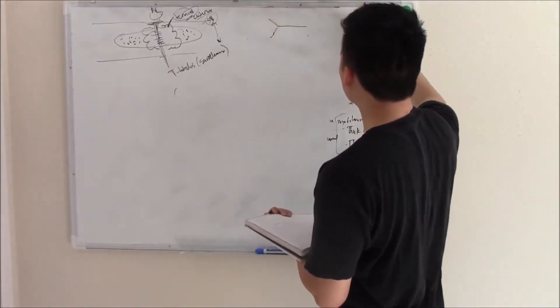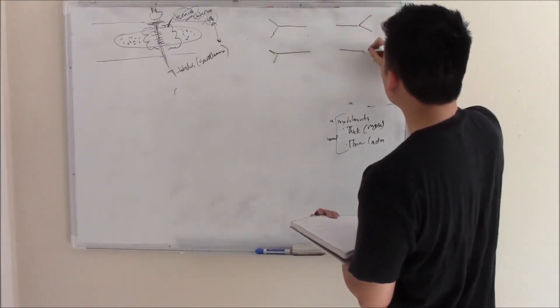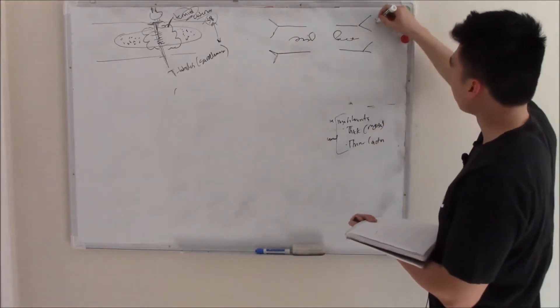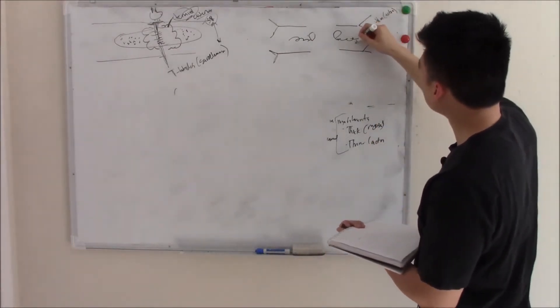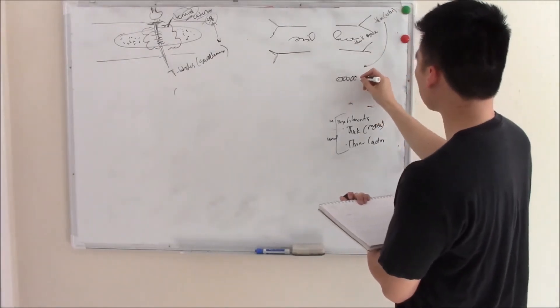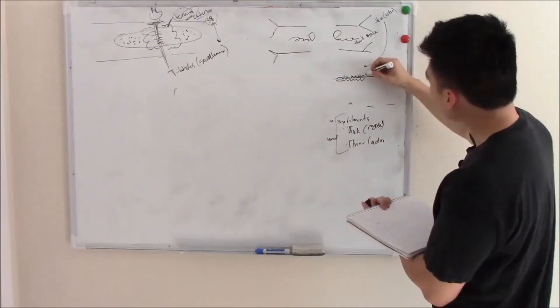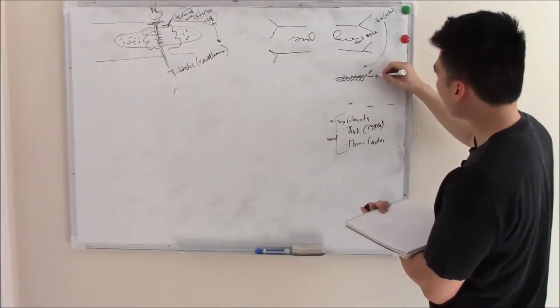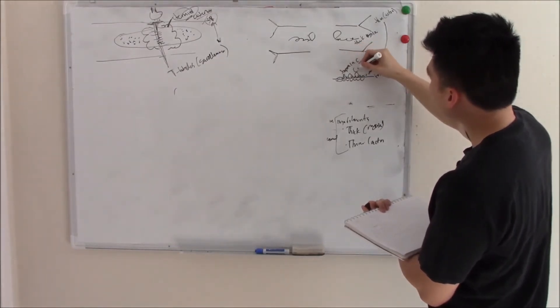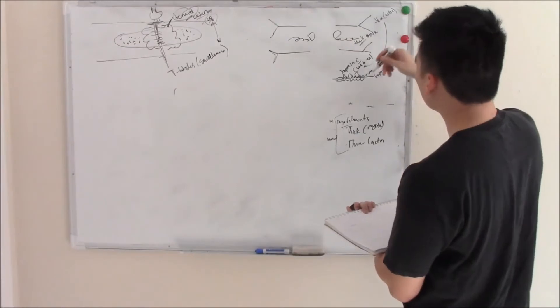You have thin cords and thicker cords. The thin ones are made of actin, but they also have other components. There's tropomyosin that covers actin, kind of draping over it. And you have little proteins called troponin C that like to bind to calcium.